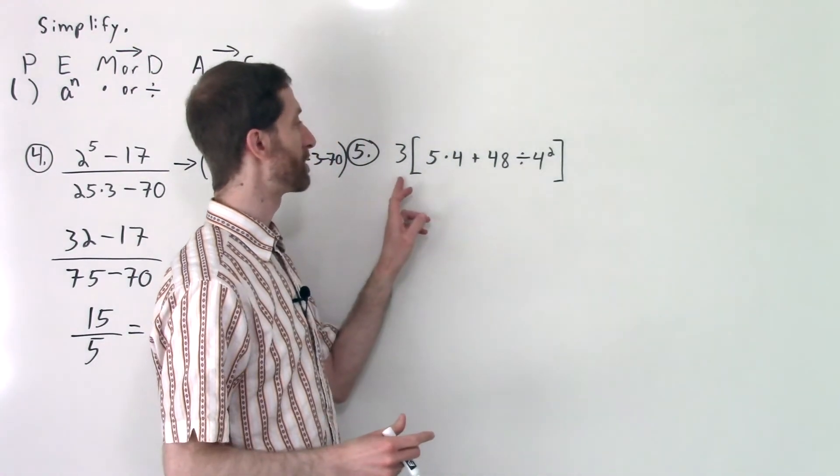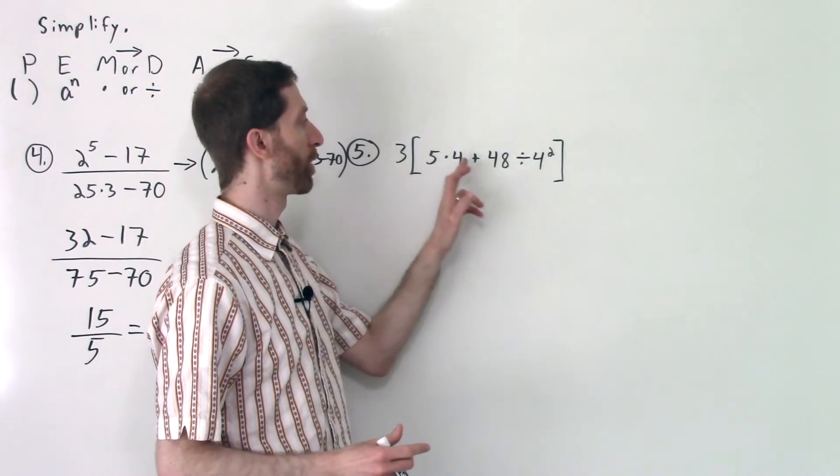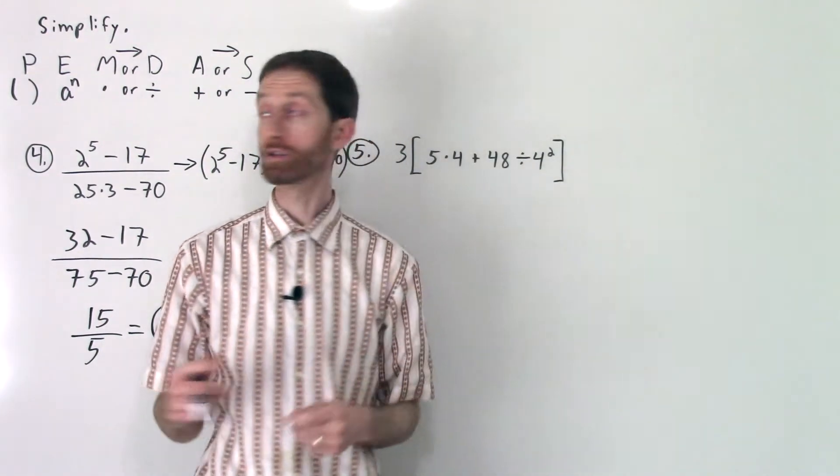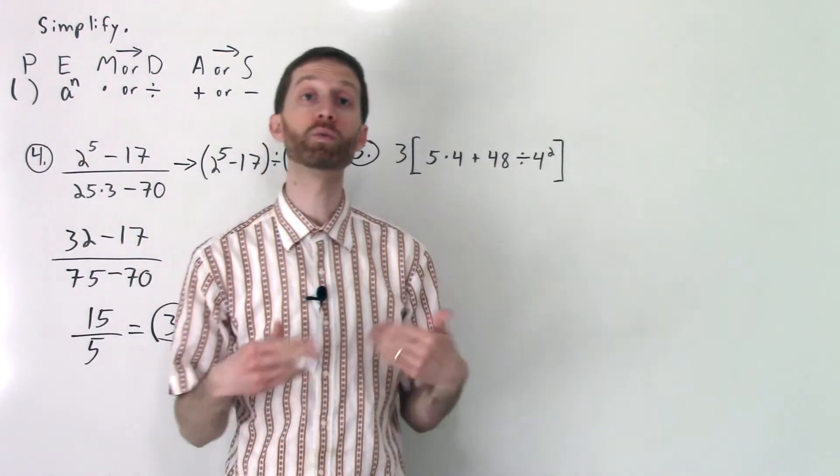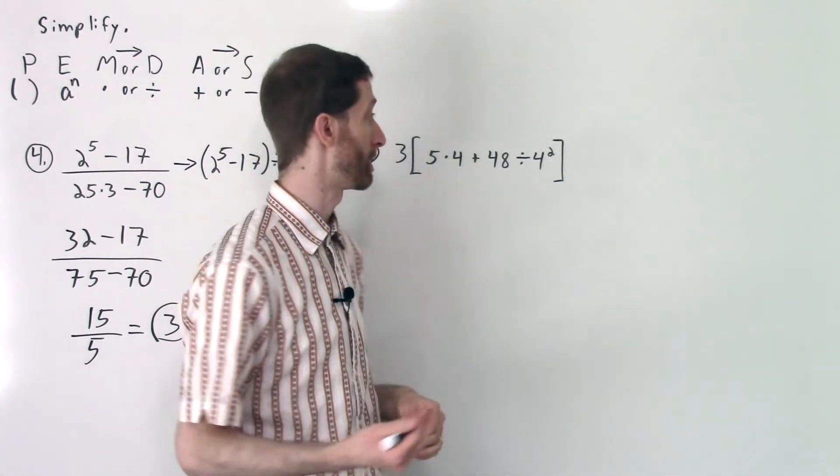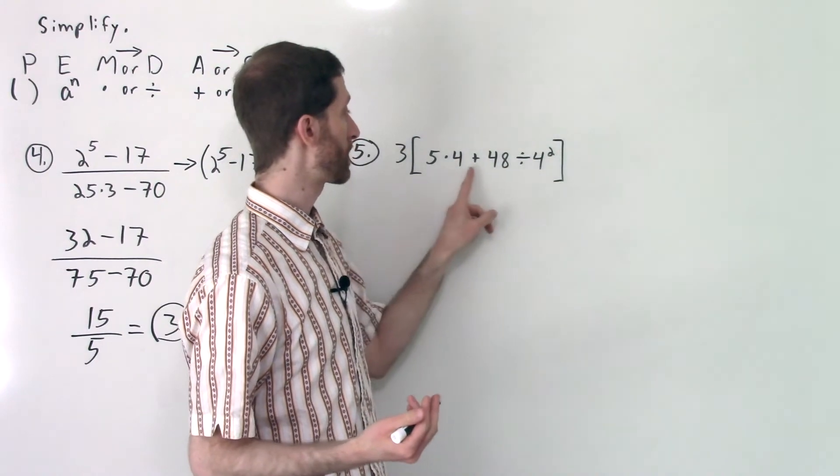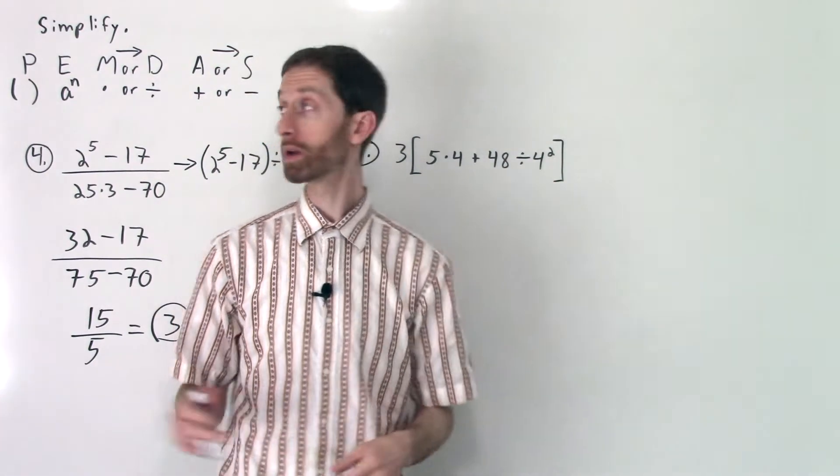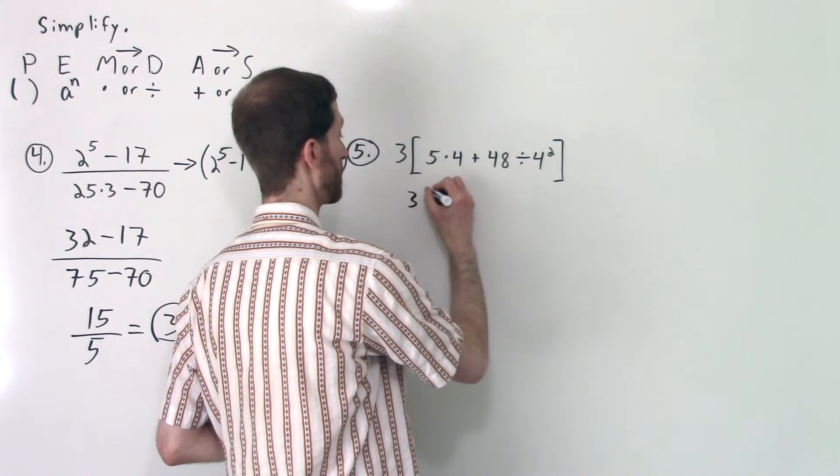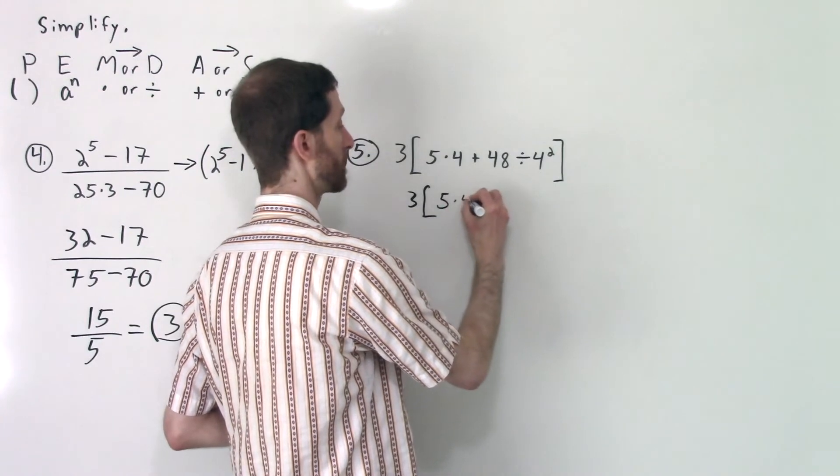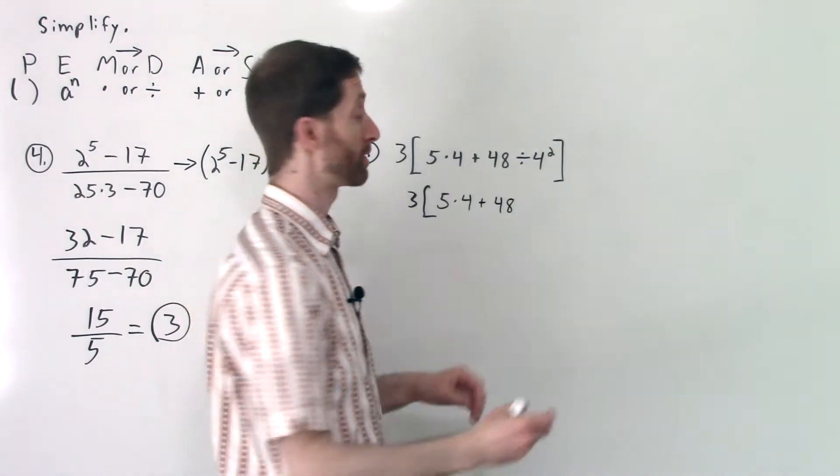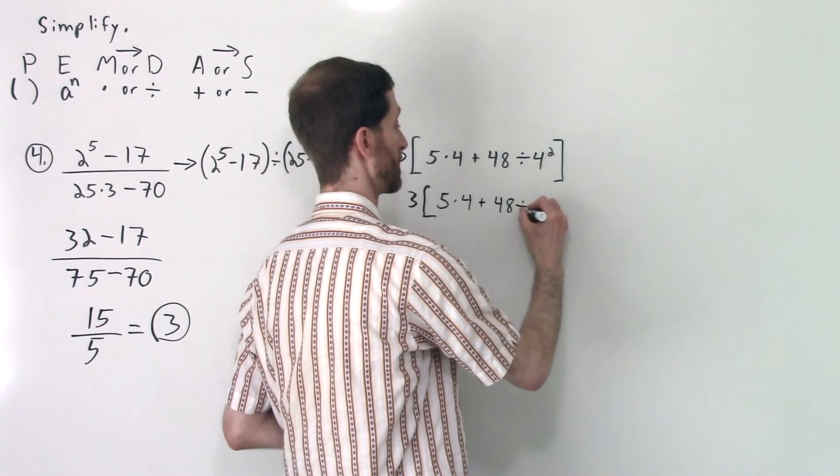This next problem here is 3 times the quantity 5 × 4 + 48 ÷ 4². This entire thing is in brackets. Those brackets act as grouping symbols just like parentheses. So we must observe the order of operations in here first before we do the multiplication by 3. The first thing that I see here is the 4². That's an exponent. So we're going to do the 4² first. So I get 3 times, and now I'm just copying. 48 ÷ 4² is 4 × 4, which is 16.